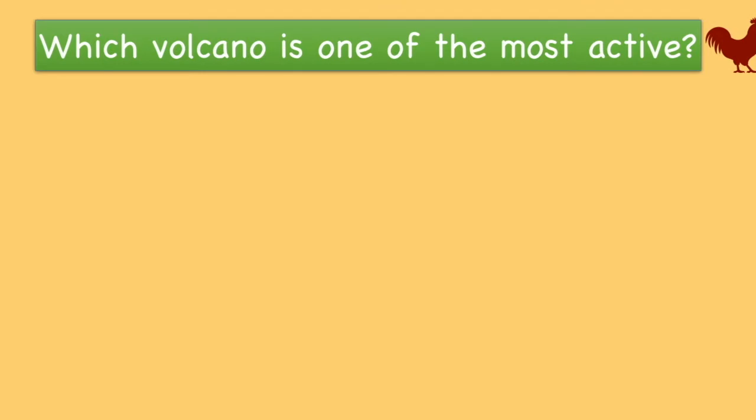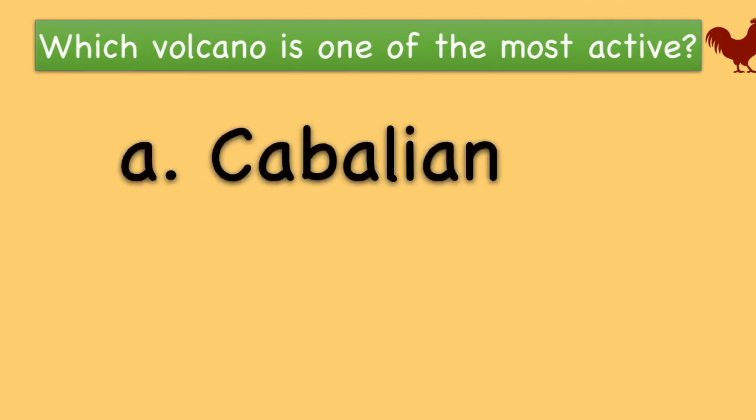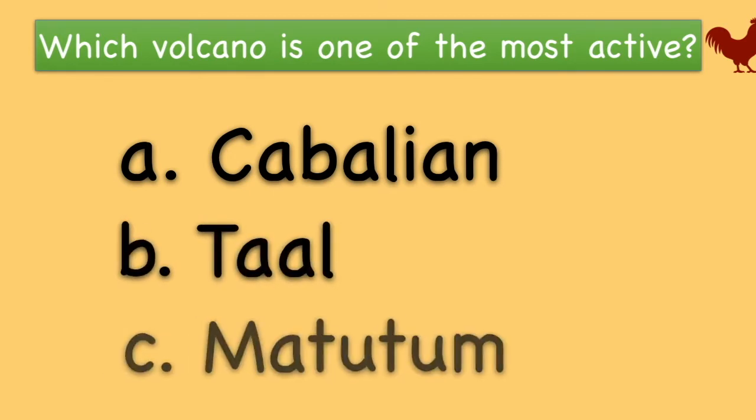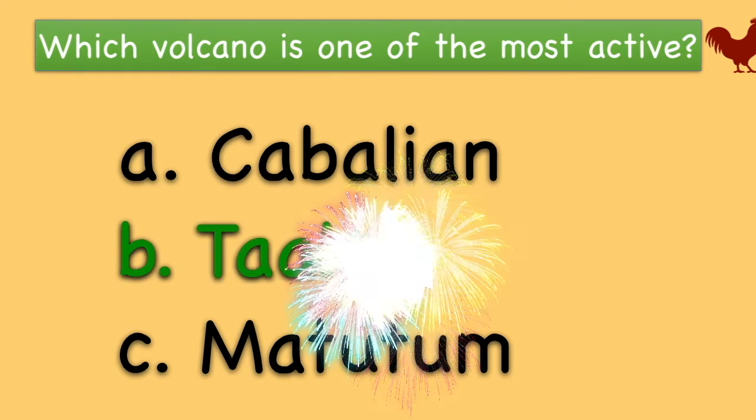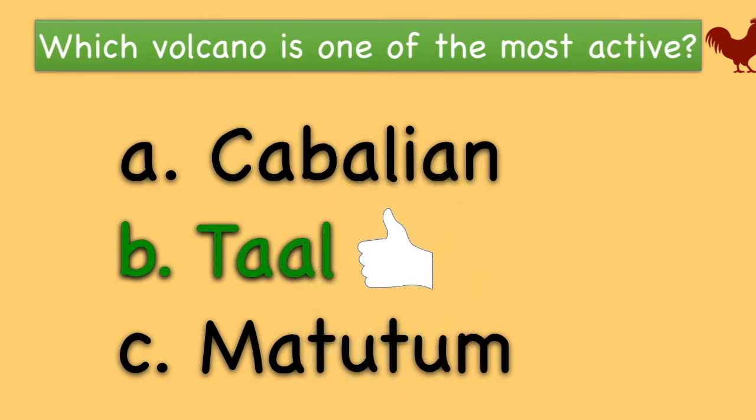Which volcano is one of the most active? Kabalian, Taal, or Matutong? That's right. Taal is one of the six most active volcanoes in the Philippines.